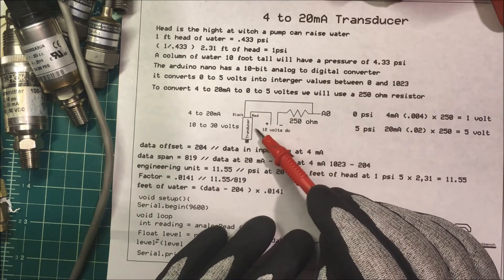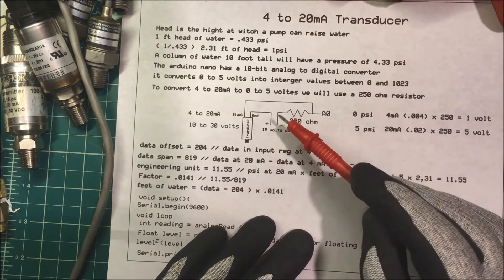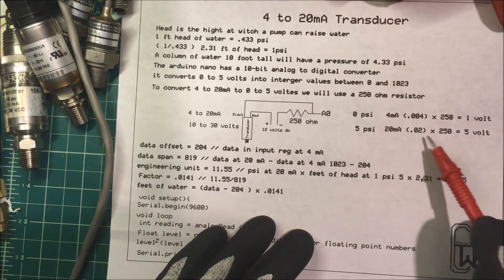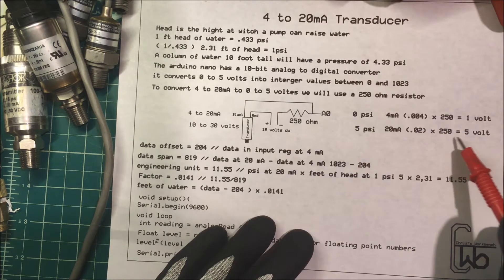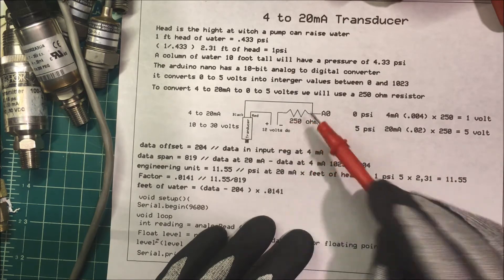Now at 5 psi my transducer is going to put out 20 milliamps. 20 milliamps times 250 ohms is going to be 5 volts. I'll be dropping 5 volts across here.